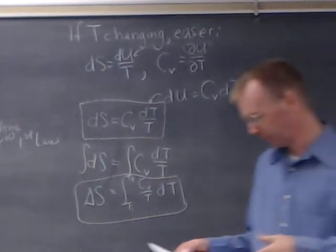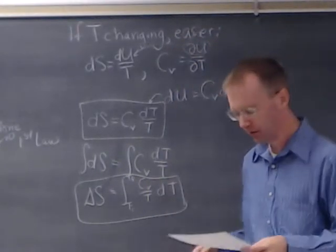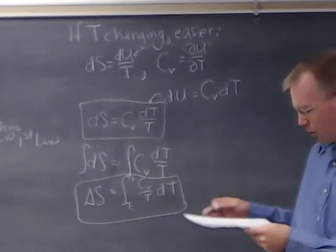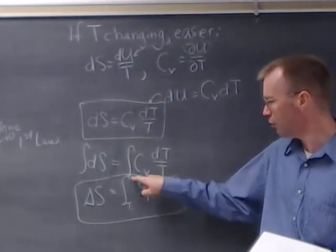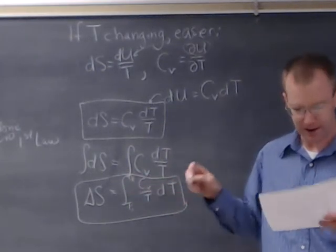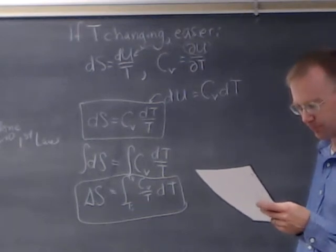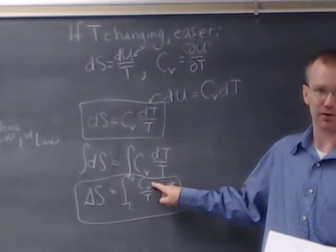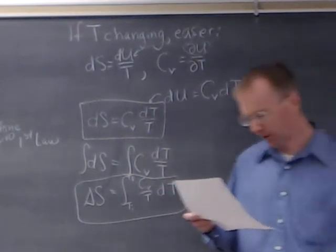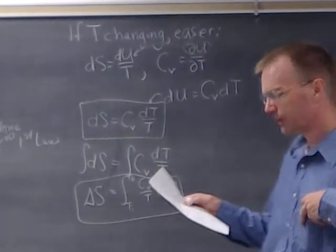If you can measure the heat capacity or look it up in a table, you have everything needed. Sometimes Cv is more or less constant over the temperature range of interest — in that case you get delta S equals Cv times ln(Tf/Ti). Other times the heat capacity varies significantly, and you may need to integrate numerically or use a known functional form.